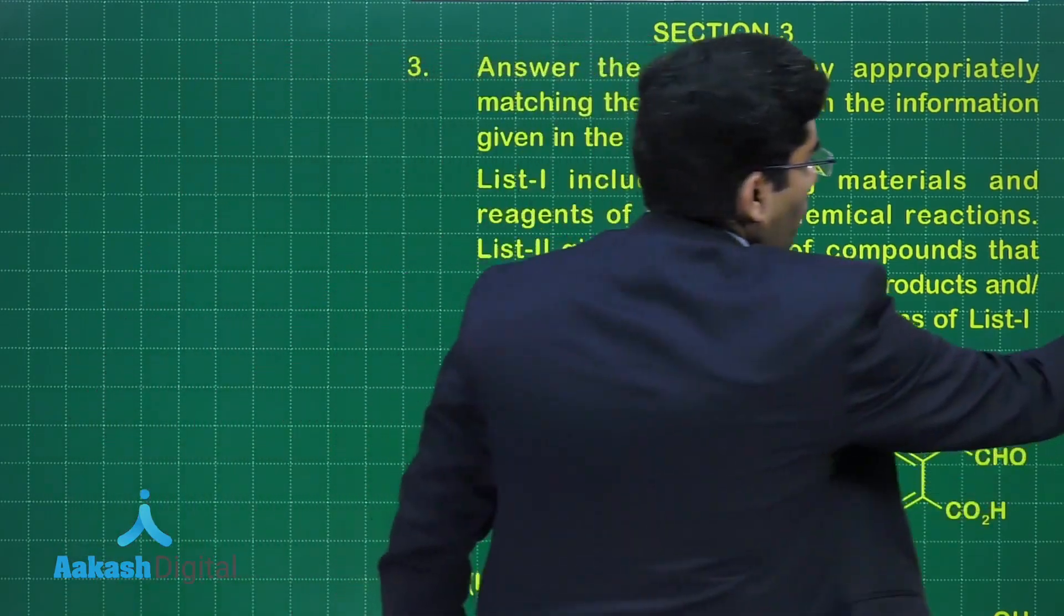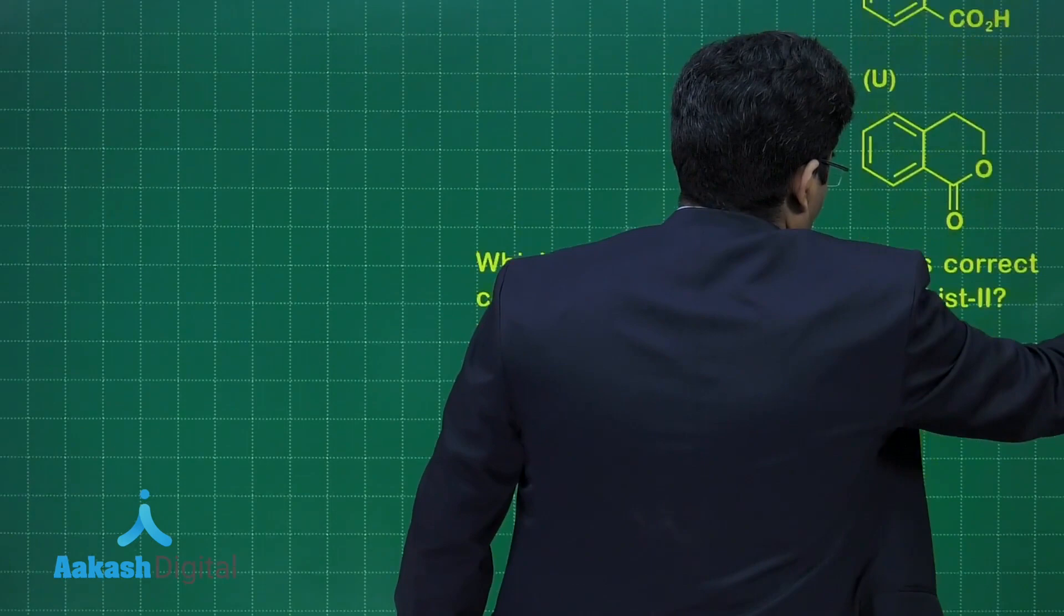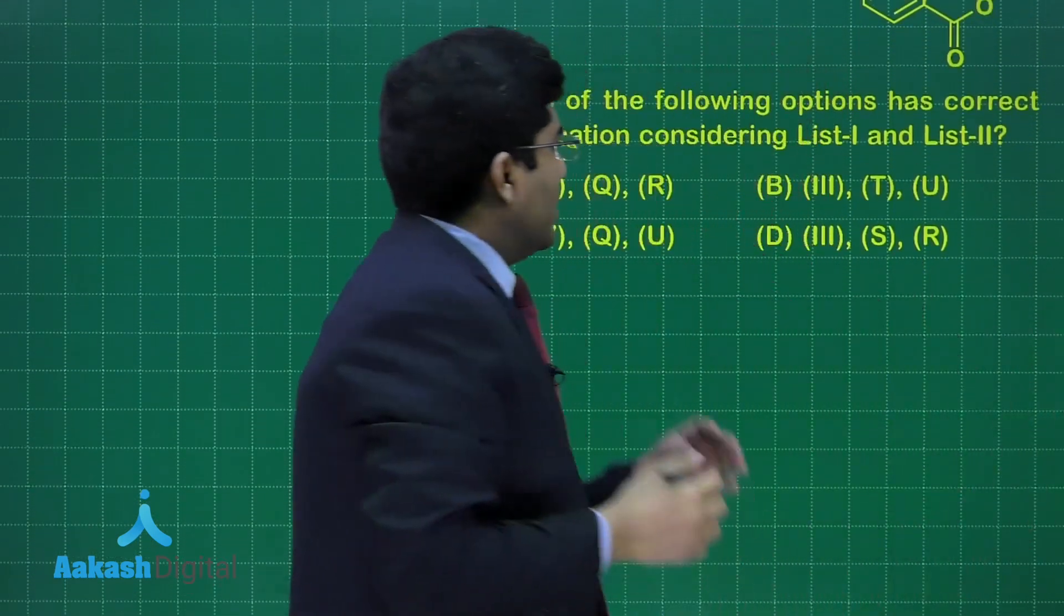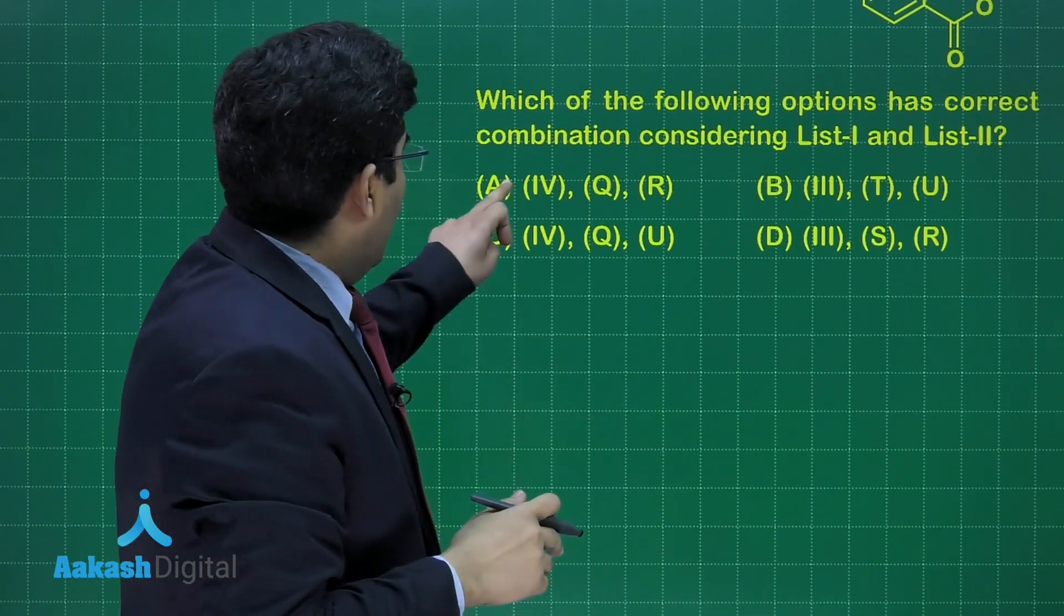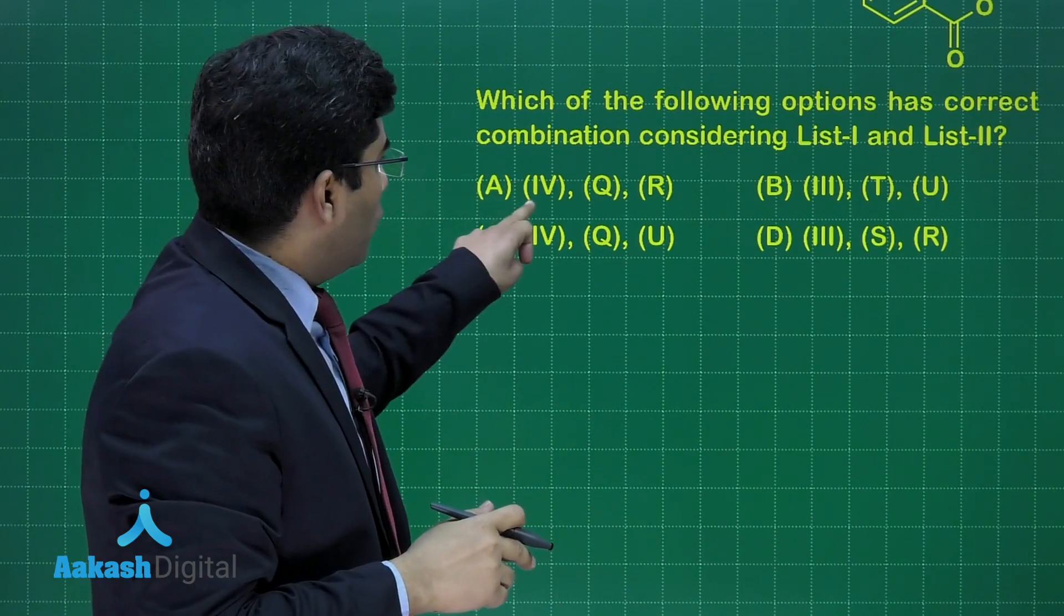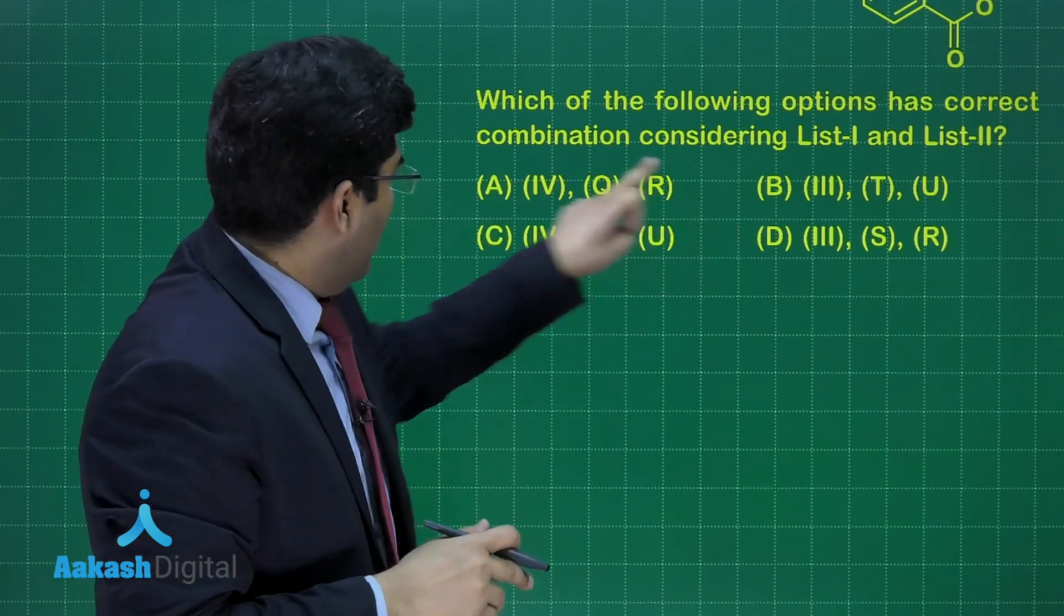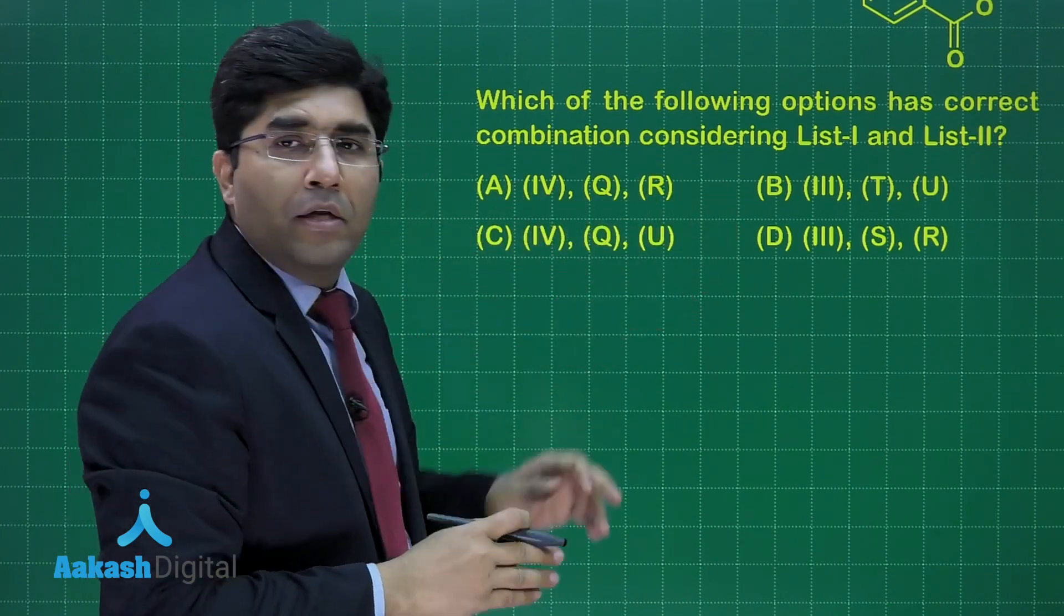There is another list, List-II. Now in this type of question, the option is the fourth one, then the third one, fourth and third.